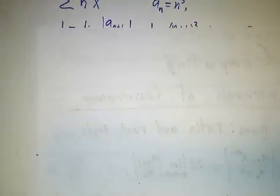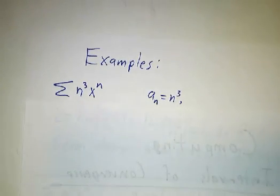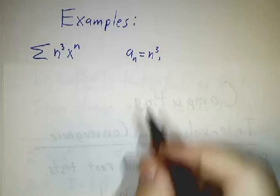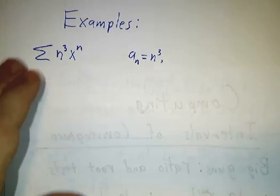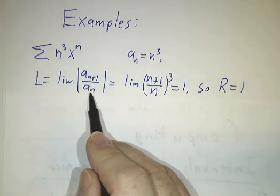So let's look at some examples. Our first example is a sum of n cubed x to the n. In this example, a_n is n cubed, and we compute by the ratio test the limit of a_n+1 over a_n.